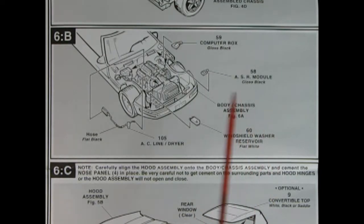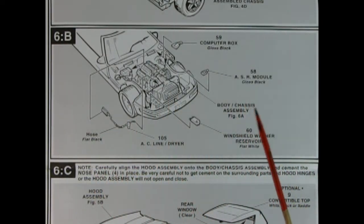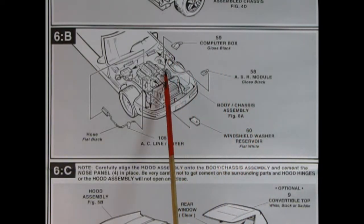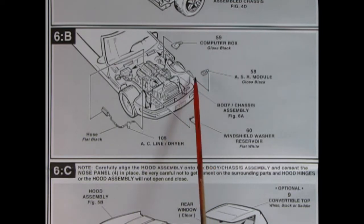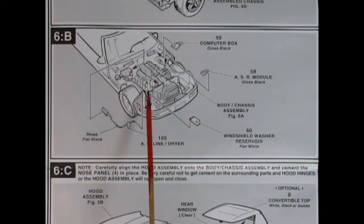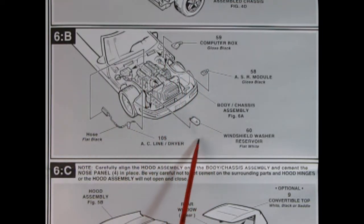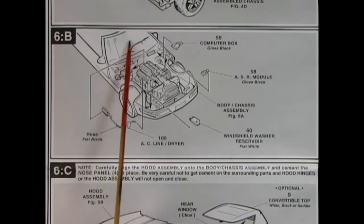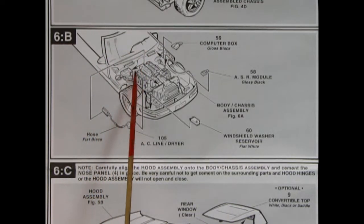Now in panel 6, we've got all these little teeny tiny parts. These are always the most difficult for me because, again, I don't have fingers. Okay, so you put your computer box in here. Your ASR module goes up against the firewall, it looks like. And then we've got our windshield washer reservoir which goes right in that little spot there. And our AC line dryer and hose which goes all the way up and then you bend down here and you go right in there.